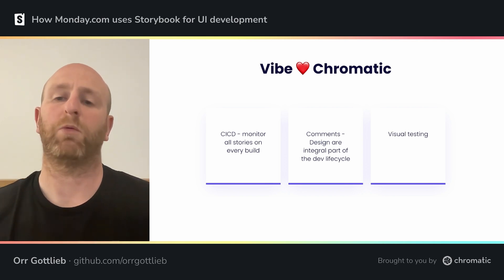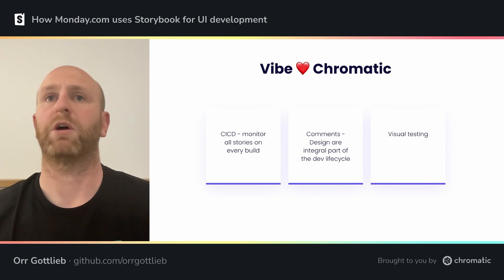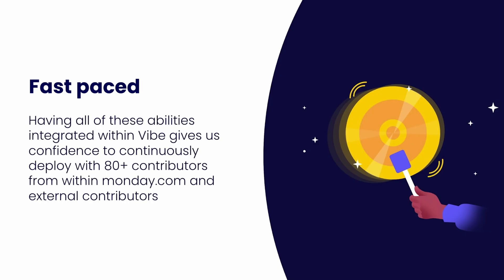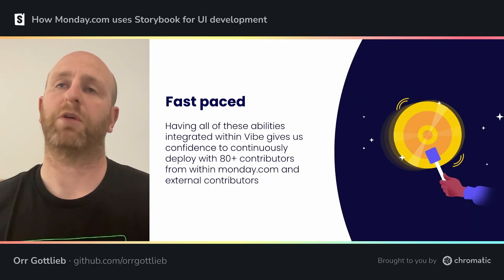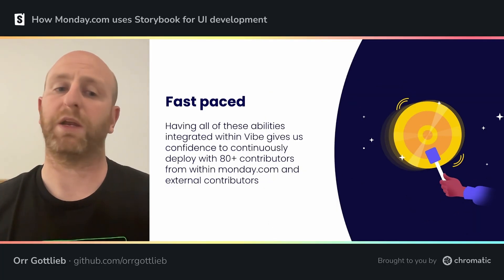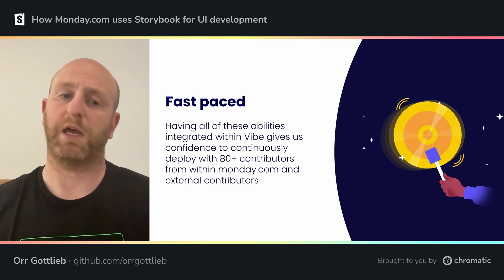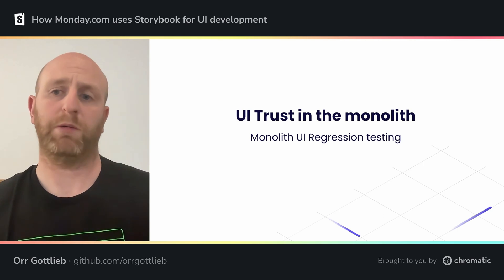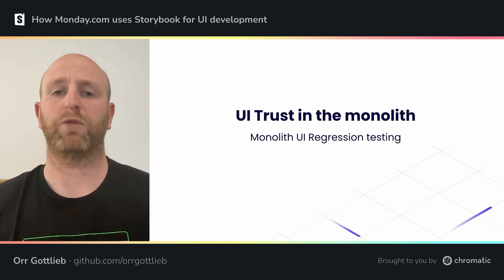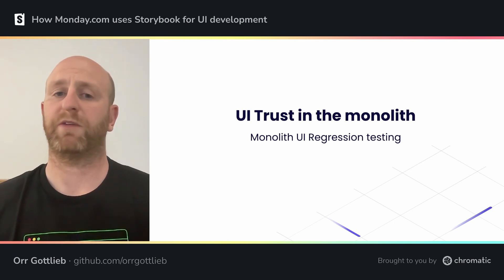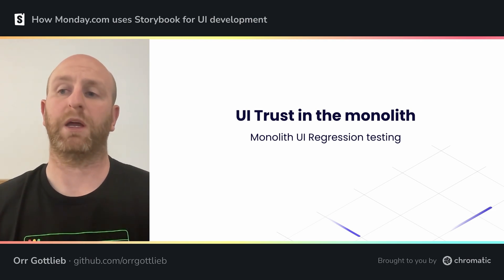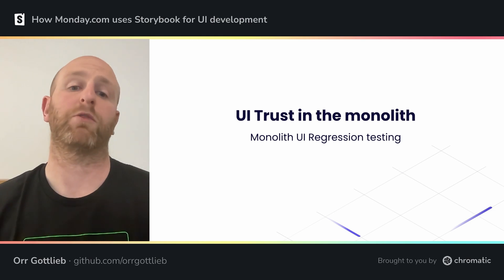We also use visual testing in Chromatic to monitor our CI/CD and make sure that nothing really changes. Having all of these abilities allows us to deliver quality core libraries with over 80 contributors from within and outside of Monday. Using Storybook and Chromatic in our core libraries is pretty straightforward. But I really want to show you how we use Storybook and Chromatic in our monolith to keep regression from happening.